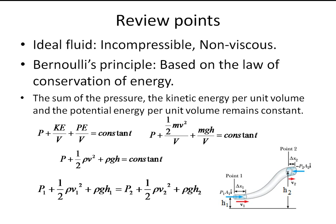When this is written for different points, P1 plus half rho v1 squared plus rho gh1 equals P2 plus half rho v2 squared plus rho gh2. This is known as Bernoulli's equation.